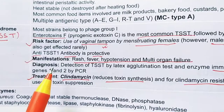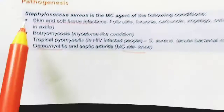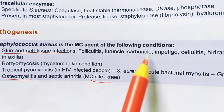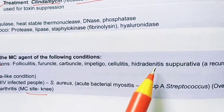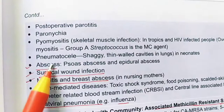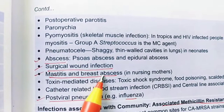Treatment of toxic shock syndrome includes clindamycin. S. aureus causes various skin and soft tissue infections, including folliculitis, furuncle, carbuncle, impetigo, cellulitis, and hidradenitis suppurativa. Other diseases include osteomyelitis (mainly in the knee), pyomyositis (skeletal muscle infection), abscess, surgical wound infection, mastitis, breast abscess, and post-viral pneumonia.